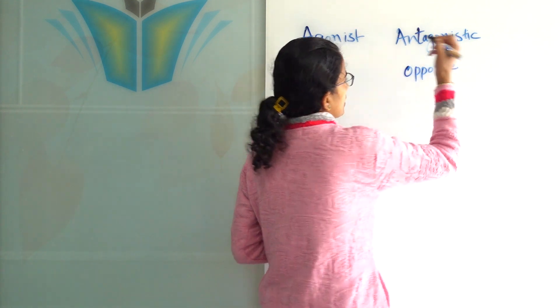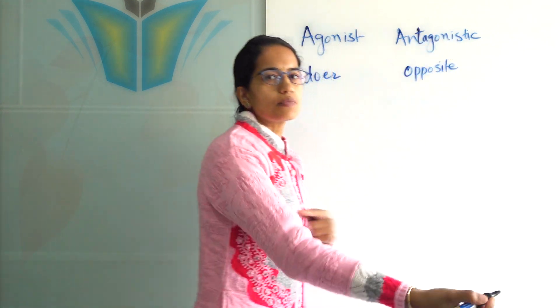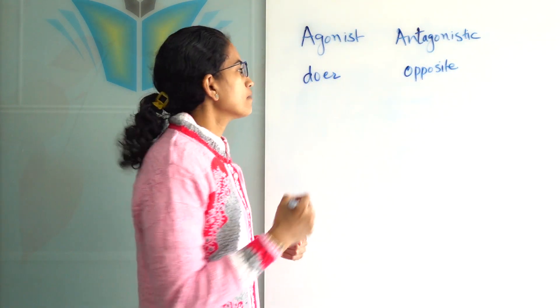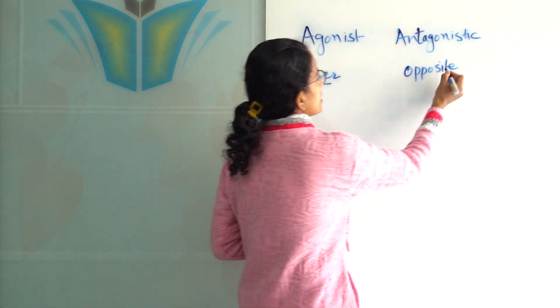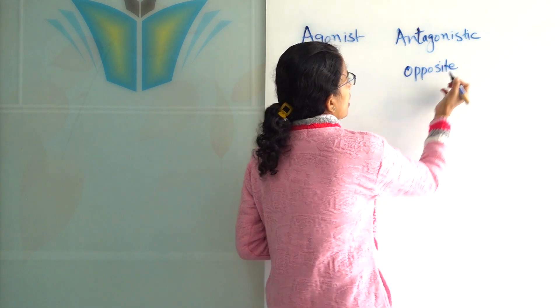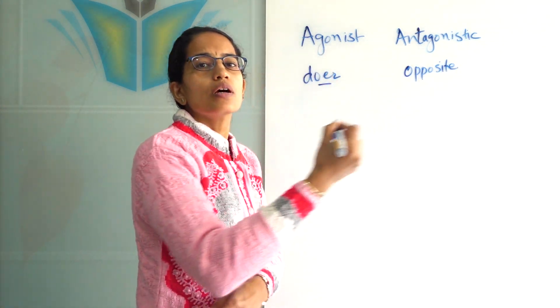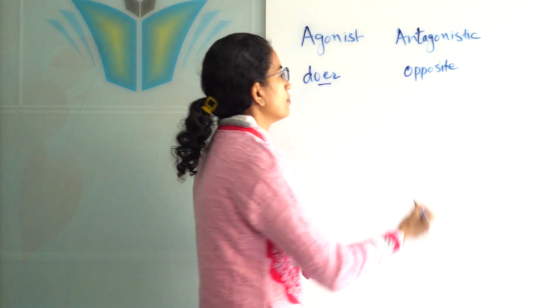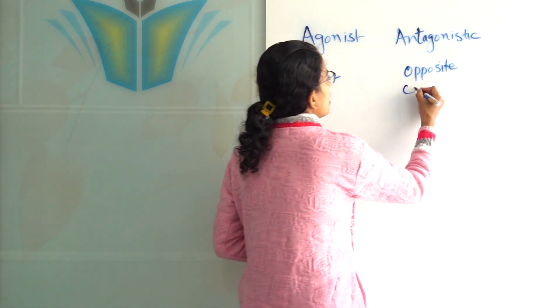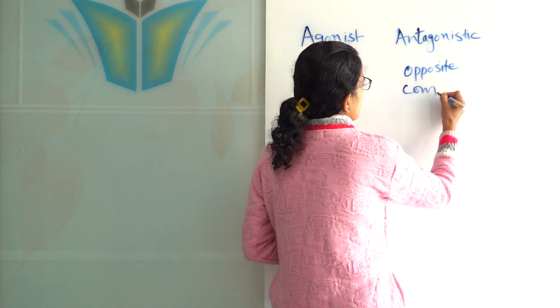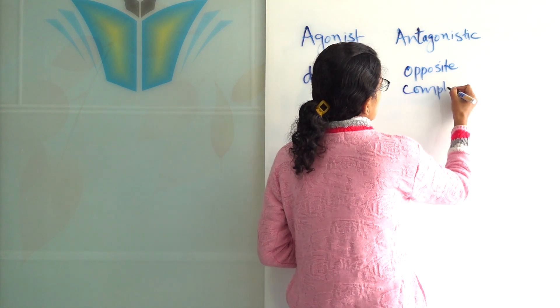Usually muscles behave in pairs. So if there is a doer muscle, there is a muscle that would have an opposite or complementary action.